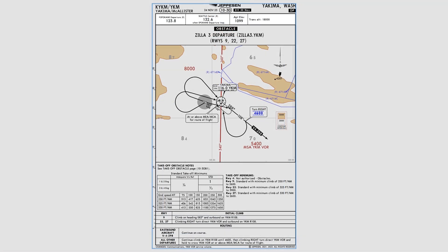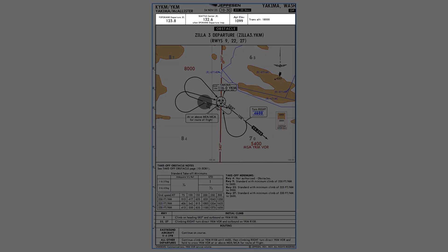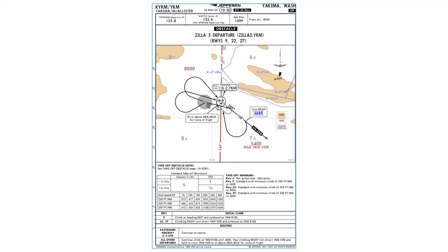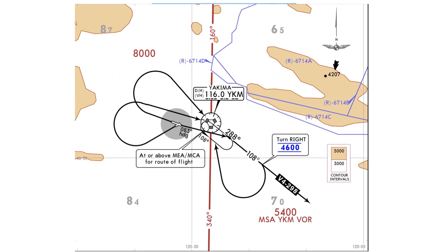Across the top, we see the familiar row of information and frequencies we have on other Jeppesen charts. On the plan view, the procedure itself is diagrammed out. Maybe the biggest advantage of Jeppesen departure and arrival plates is the fact that they're often drawn entirely or at least partially to scale, which when paired with ForeFlight allows us the powerful tool of geo-referencing while in flight.